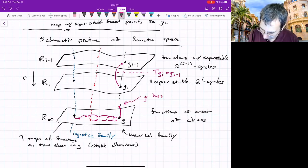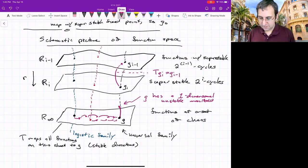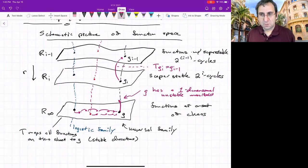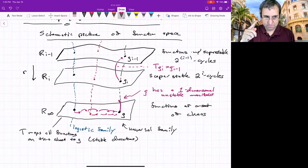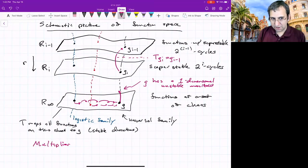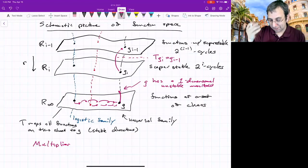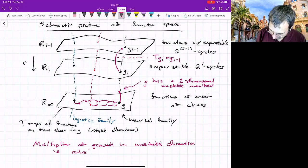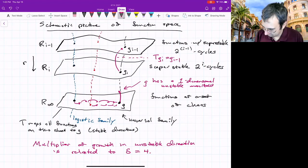So g has a one dimensional unstable manifold. It's the unstable direction. Things are going away. G as a fixed point has an infinite number of stable directions and one unstable direction. And if you think of the multiplier quantifying growth in that unstable direction, that is what is related to delta, 4.6 something.